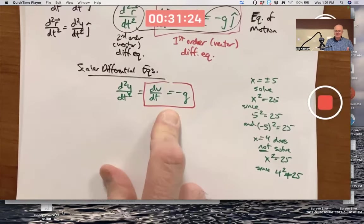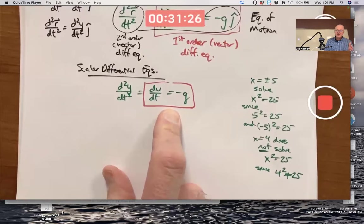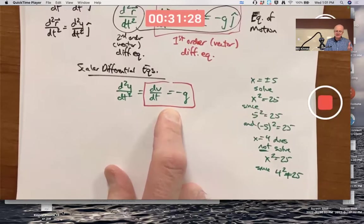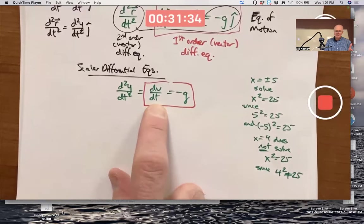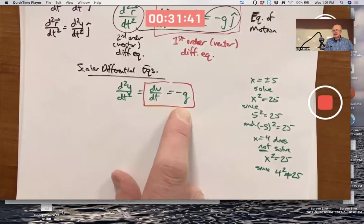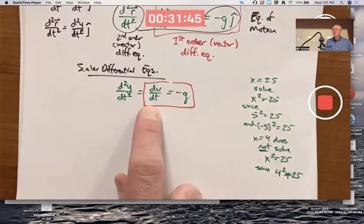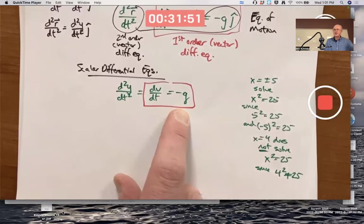Likewise with the differential equation, I'm after a function or functions, solutions that solve the equation. I'm after V as a function of T whose derivative is always negative G. Find a function whose derivative with respect to T is always negative G, negative 9.8 if you're near the surface of the earth. What do you do? You can guess.